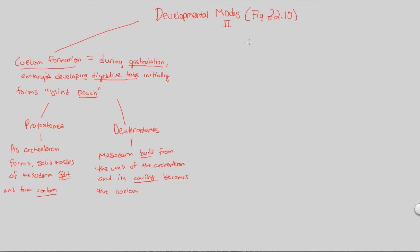The final developmental mode to look at is the fate of the blastopore. This is where we can finally answer the question: where do the names protostome and deuterostome come from? We talked about the blastopore earlier when we defined it, and now we're going to apply that definition.